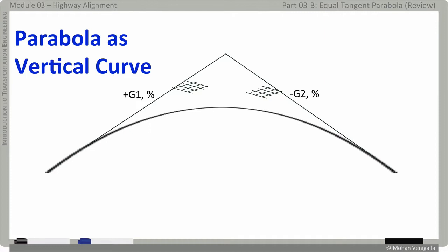Enter parabola. Equal tangent parabola, that is. Its initial tangent will follow the upward slope, G1. And its final tangent will follow the downward slope, G2.